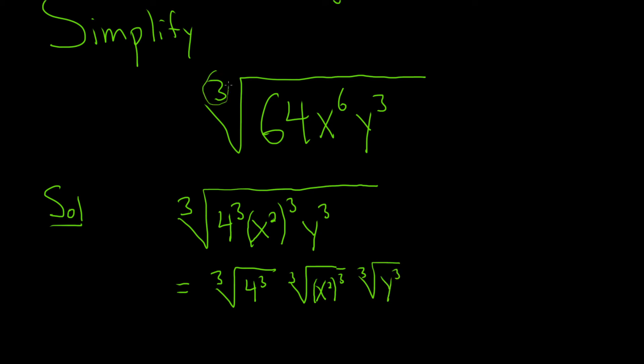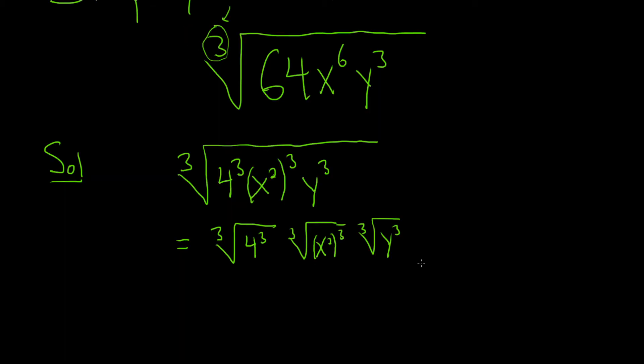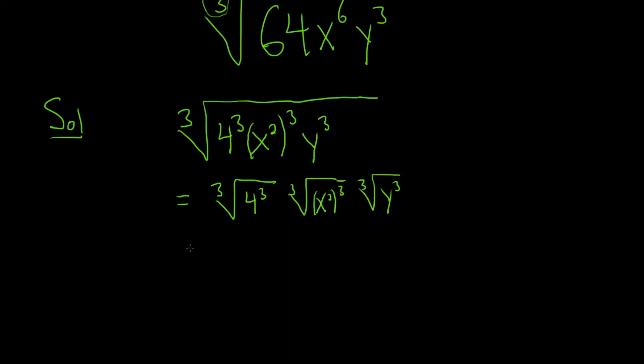And the reason we're doing three is because there's a three here. If there was a five here, you'd write everything to the fifth power. If there's a six, everything to the sixth power. And now we just get 4x²y. Right? Because the cube roots get rid of the threes. And that would be the final answer.